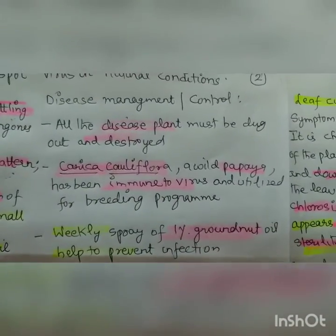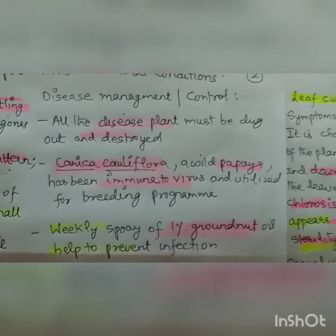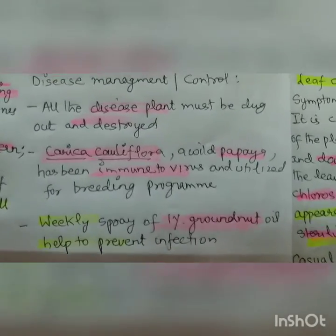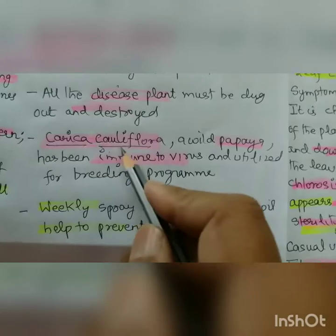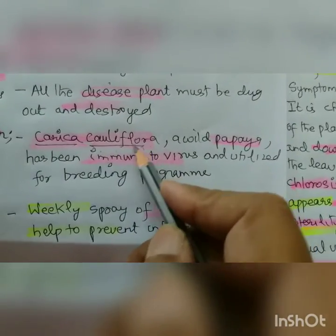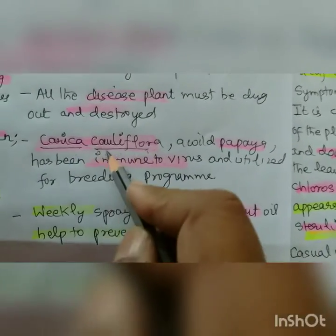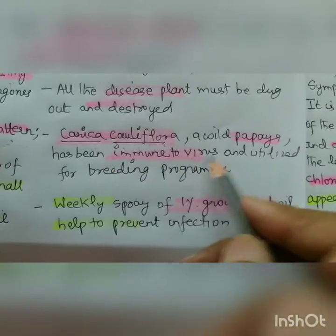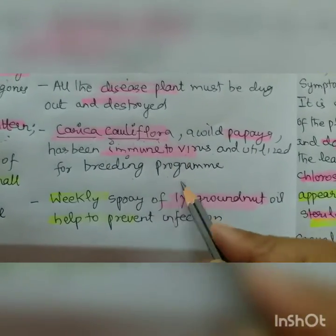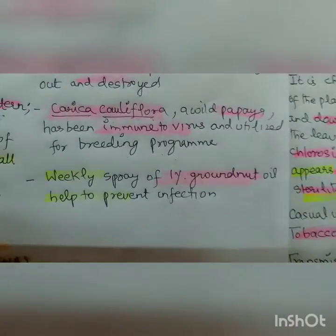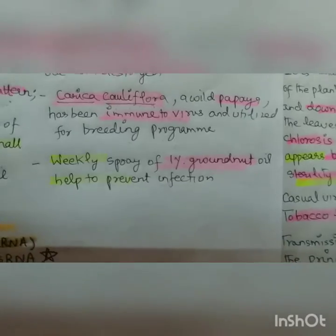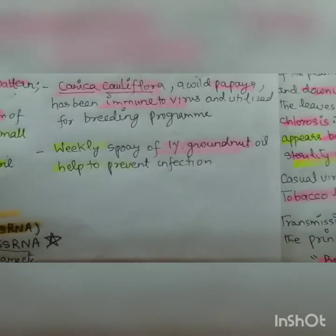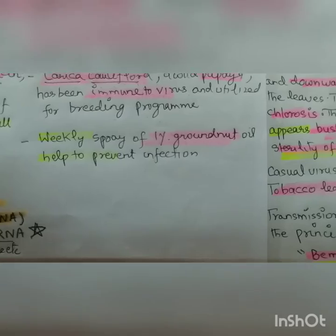This virus is not transmitted through seed or soil. It can be transmitted by mechanical sap and bud grafting. In nature, the aphid Aphis gossypii is known as the vector — it transmits the virus under natural conditions. For disease control, all diseased plants must be dug and destroyed. Carica cauliflora, a wild papaya, has been found immune to the virus and is to be utilized for breeding programs. A weekly spray of 1% groundnut oil helps to prevent infection.